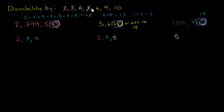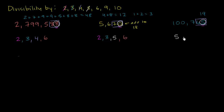For the number 6: to be divisible by 6 you have to be divisible by both 2 and 3, because the prime factorization of 6 is 2 times 3. The first number is divisible by 2 and 3, so it is divisible by 6. The second number is also divisible by 2 and 3, so it is divisible by 6. If you were only divisible by one of them, that wouldn't work — you need both. The third number is divisible by neither 2 nor 3, so it is not divisible by 6.